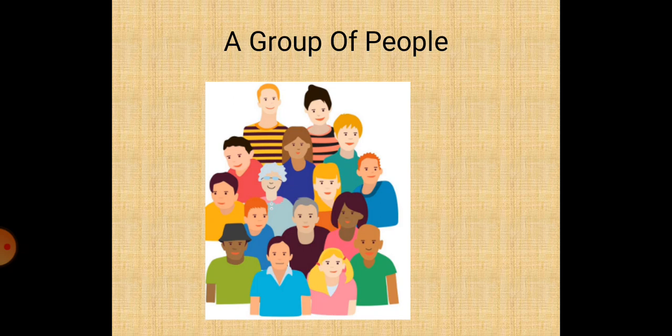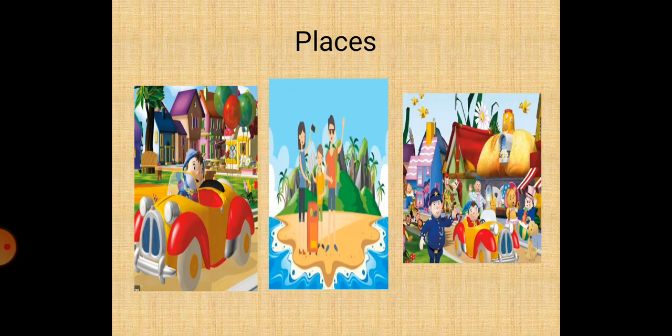Yes children, some places around us have a name, and it is a noun. For example, home, park, school. Where we stay is home — it is a place. Where we go to play is a park — it is a place. Where we go to learn is school — it is a place. All these have a name, so it is a noun.